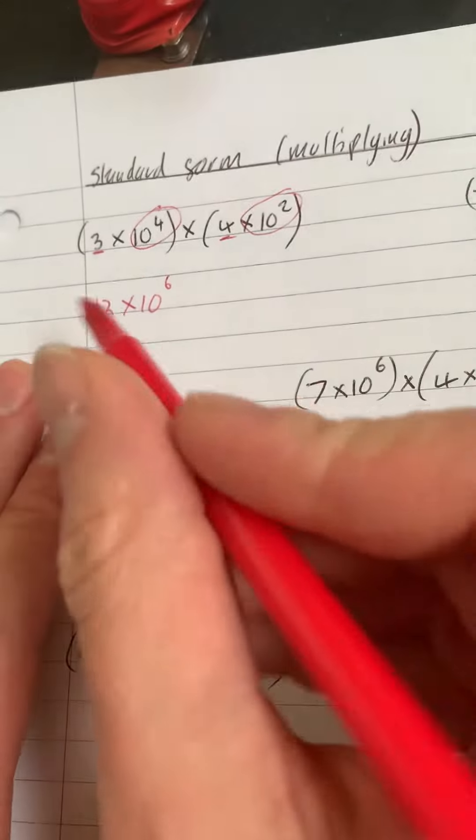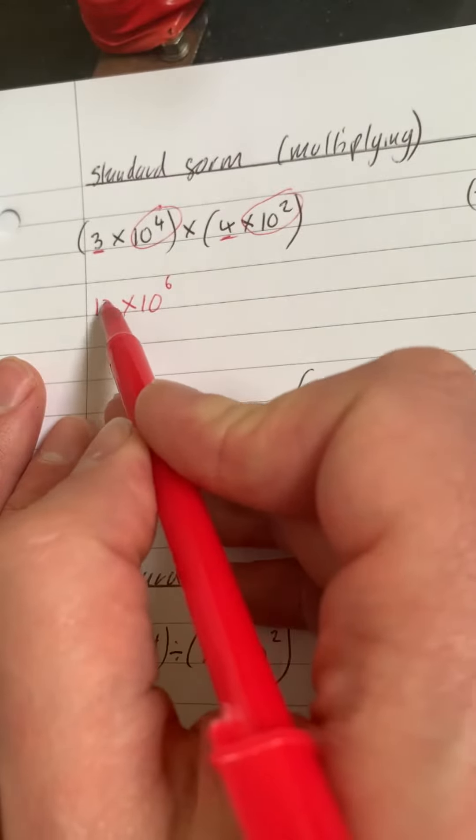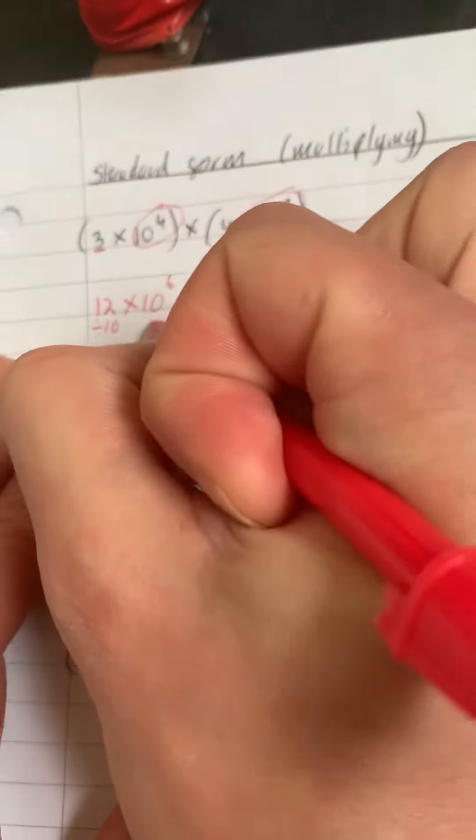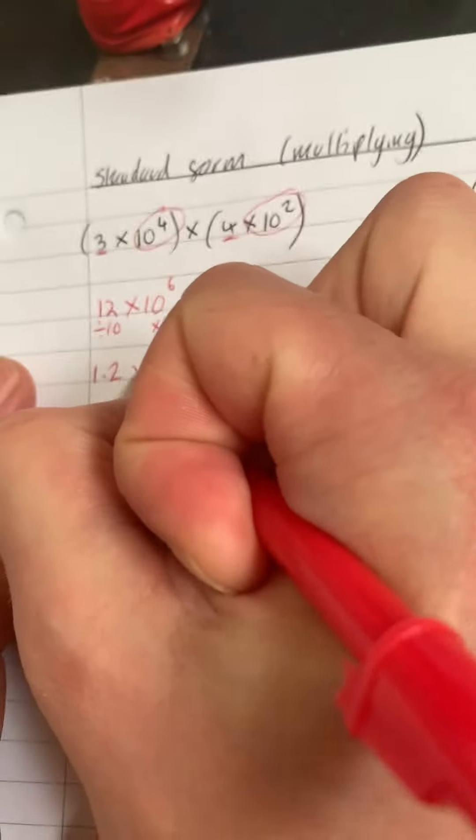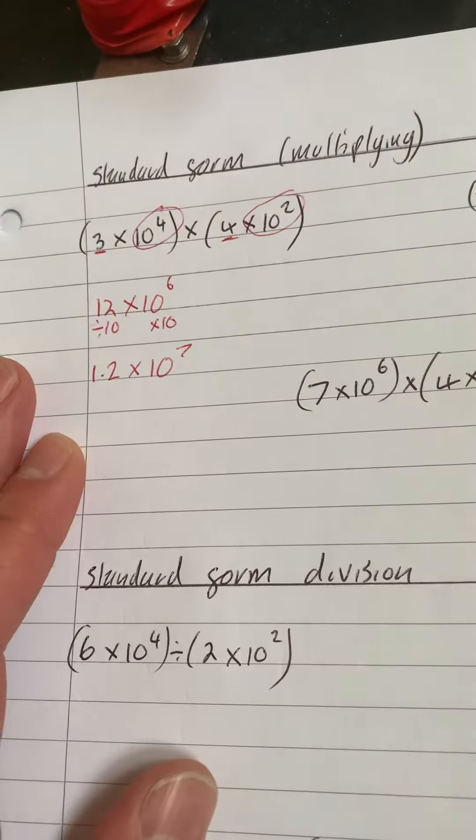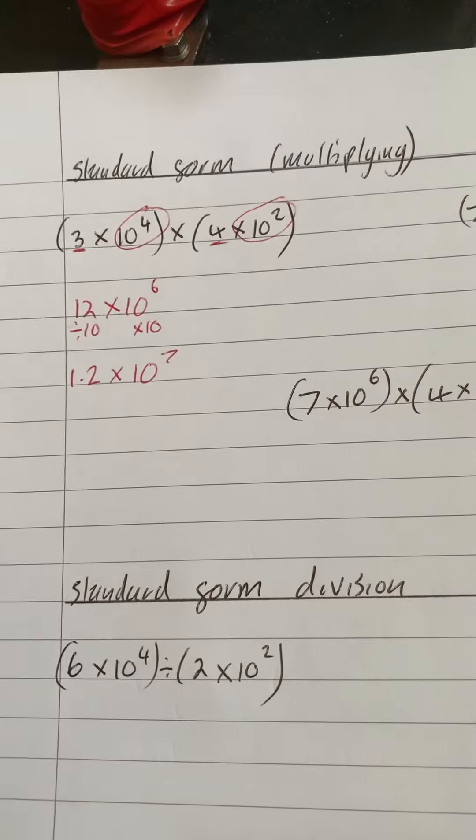Now, like I said before, standard form, this has to be less than 10, and at the minute it's not. If I divide this by 10, I'd get 1.2. So that I don't change the number, I have to times this side by 10, which is the same as adding a power. So we've got 1.2 times 10 to the power of 7.